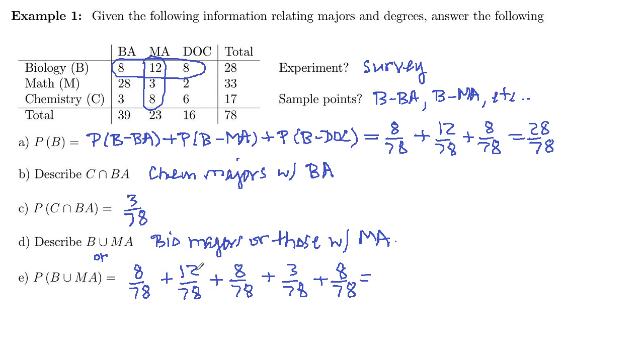And we add those together and get 62 out of 78. I think that's right. So 20, 31, 8, I'm sorry, 39 out of 78.